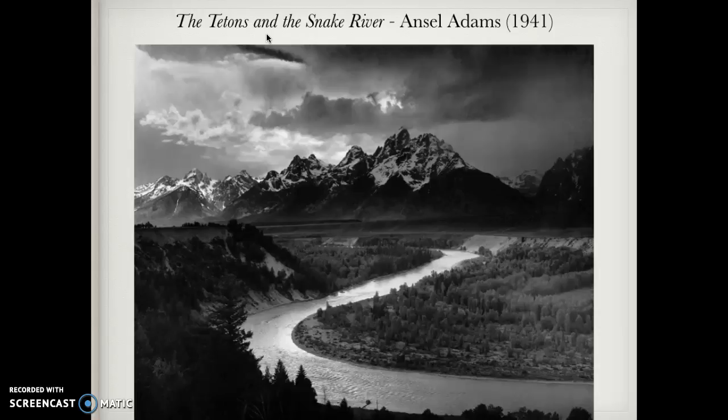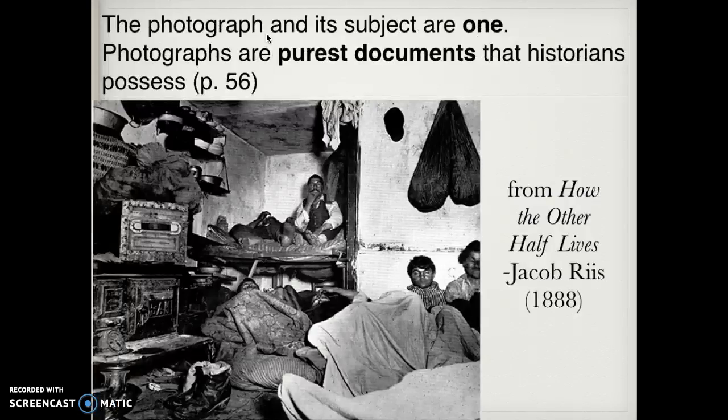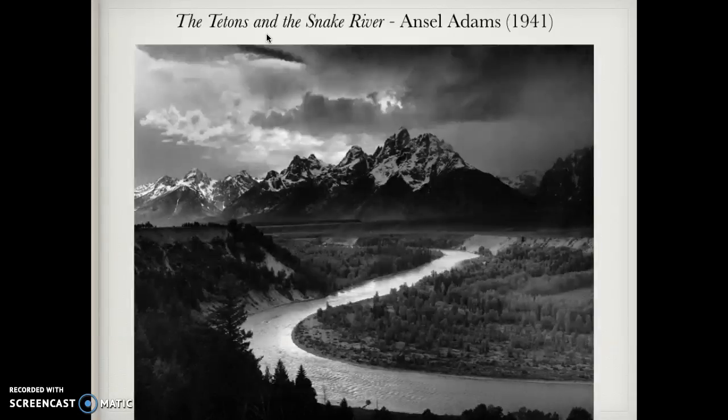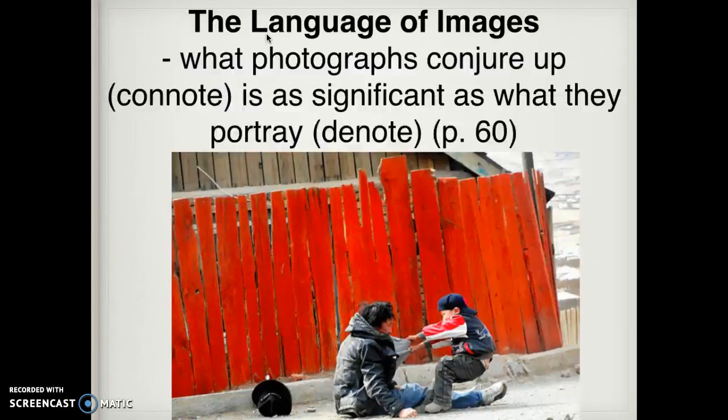This next picture by Ansel Adams is of the Tetons and the Snake River in Yellowstone. Adams pushes the boundary of the camera — he's actually distorting reality compared to what the human eye would normally see. The normal human eye cannot see this distance and keep it all in focus; you either see the foreground or the background, but not both. Through techniques he taught himself, Adams shows the mountains, the foreground river, all in focus. This technique starts distorting the reality of what a picture is — from capturing an image in time to showing a heightened reality.